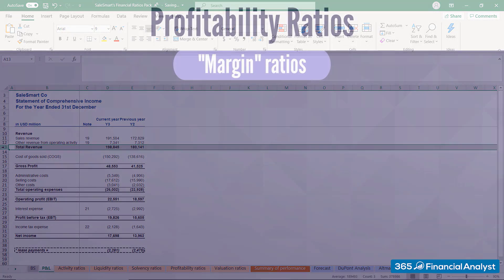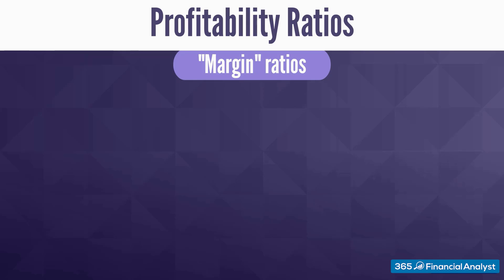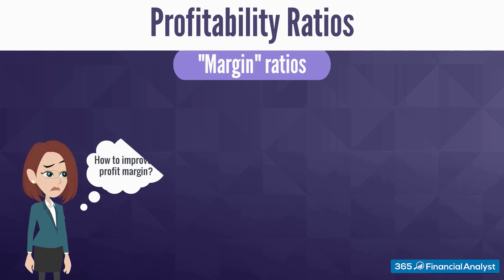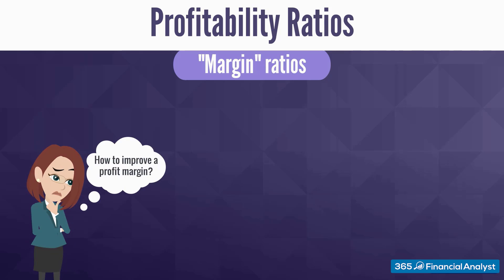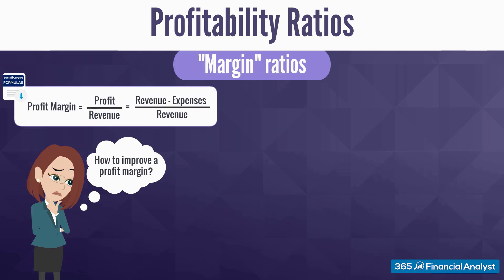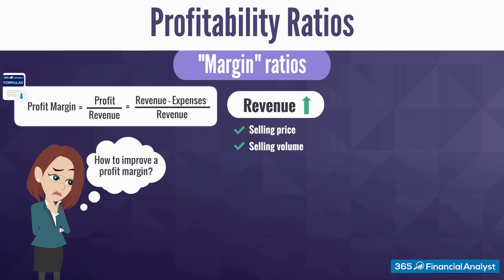In our daily life, we come across firms reaching sales milestones and those falling to the ground. Striving for success, what path is a company ultimately supposed to follow to improve its profit margins? If we discern the formula, we see that it should opt for either increasing revenue by raising selling prices and sales volume, or decreasing expenses.